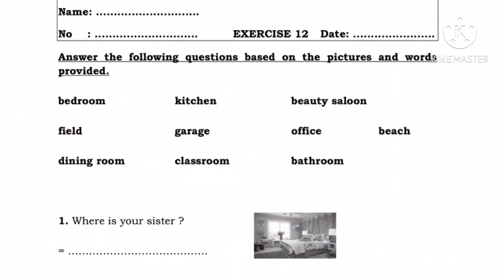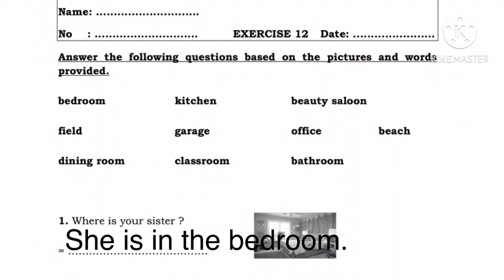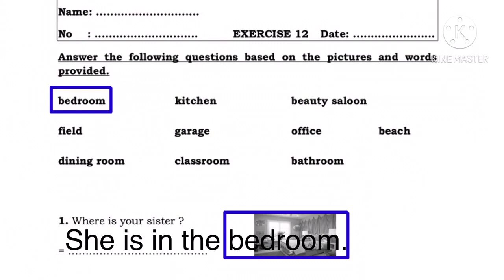Please do exercise 12 — kamu kerjakan latihan 12. I will give you the example for number one. Miss akan memberikan contoh untuk nomor satu. Please do number two until number ten — silakan kerjakan nomor dua sampai nomor sepuluh. Answer the following question based on the pictures and words provided. Number one: where is your sister? Di mana saudara perempuan kamu? She is in the bathroom — dia ada di dalam kamar tidur.